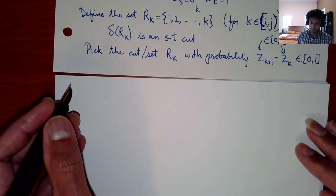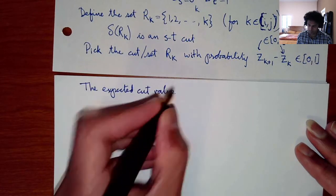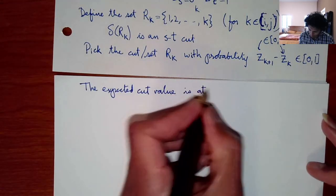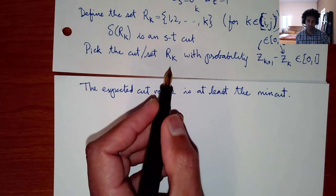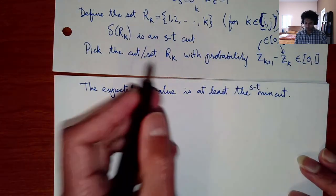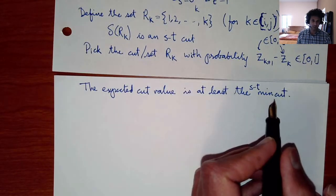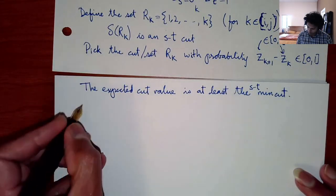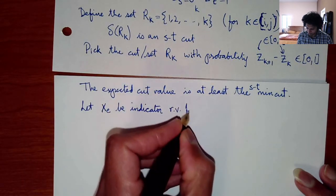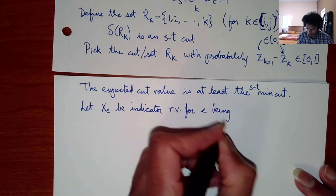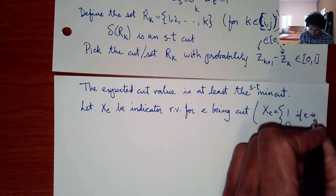Let us compute the expected cut value. The expected cut value is at least the min cut, because each R_K is an ST cut and the expected value is at least the minimum. Let X_E be the indicator random variable: X_E = 1 if edge E is cut, 0 otherwise.